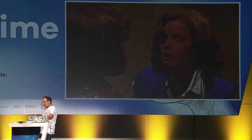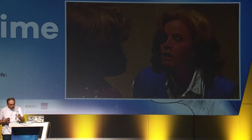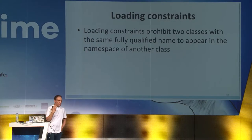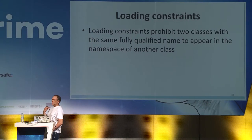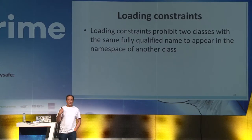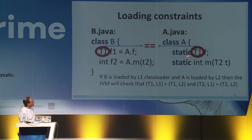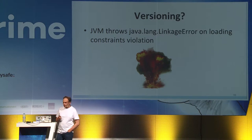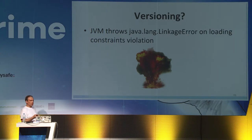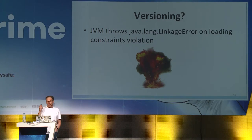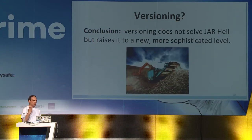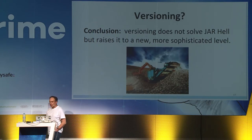The JVM specification defines so-called class loader constraints that prohibit two different classes with the same fully qualified name from appearing in the namespace of another class. For instance, if class B is loaded by class loader L1 and class A is loaded by class loader L2, the JVM will check that the type T1 is the same for both class loaders. If not, the JVM throws java.lang.LinkageError. Everyone who works with class loaders faces this problem sooner or later. So versioning does not actually solve the jar hell problem — it raises it to a new, more sophisticated level instead.